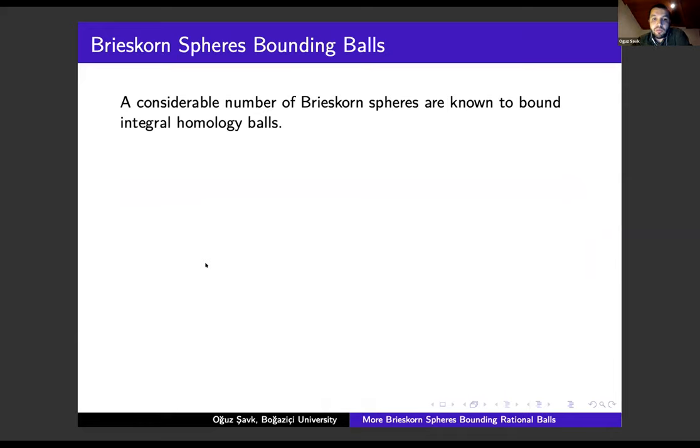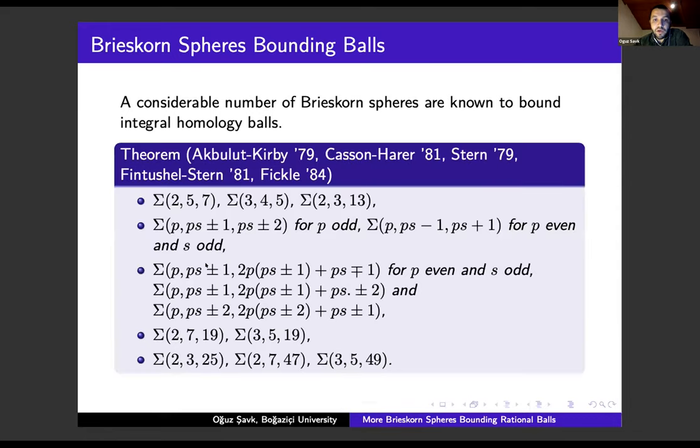A large number of Brieskorn spheres are known to bound integral balls due to classical results of Akbulut and Kirby, Casson and Harer, Stern and Fintushel, Stern and Fickle. These were all proved around the 1980s.